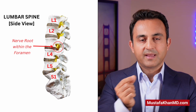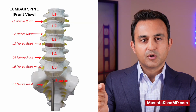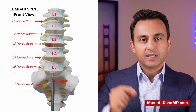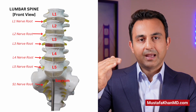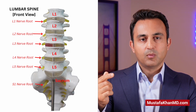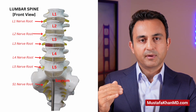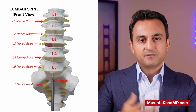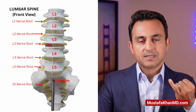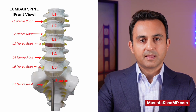The foramen can be thought of like the exit ramp through which the nerve comes out of the spine. The individual nerve that comes out of the spine between any two vertebrae is known as a nerve root. Each nerve root of the lumbar spine is numbered according to which vertebrae it comes out at. For example, the L1 nerve comes out between L1 and L2, the L2 nerve comes out between L2 and L3, and so on. Using this numbering system, you have five lumbar nerve roots and one sacral nerve root.